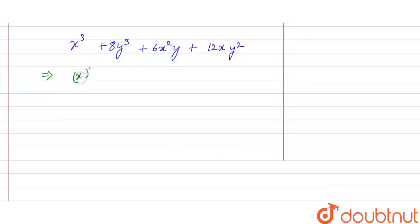If we see this x whole cube and plus 8y cube can be written as 2y whole cube because 8 is 2 cube. So 2y whole cube and plus of 6x square y plus 12xy square as it is.